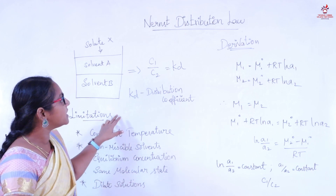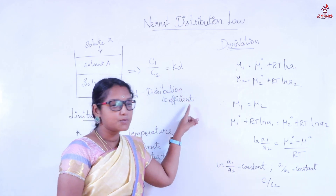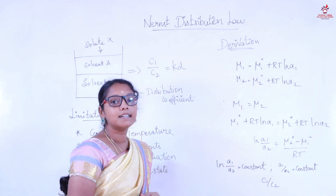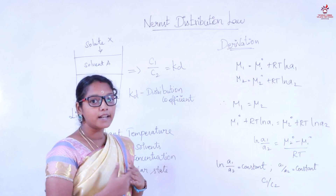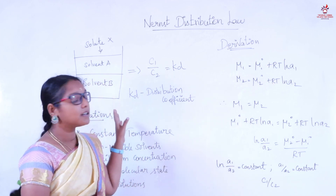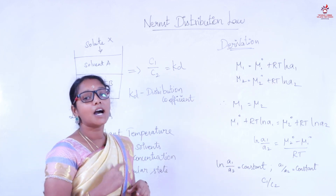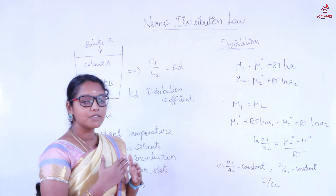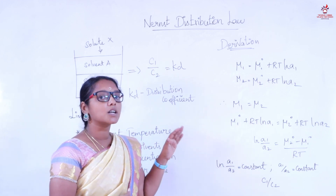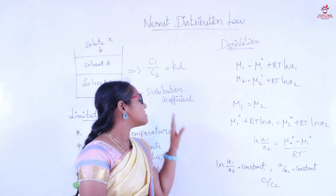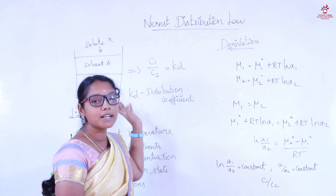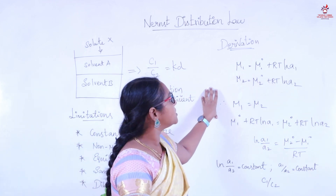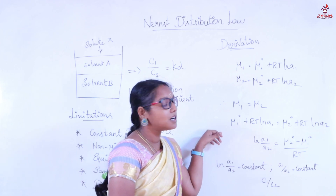Now we go to the derivation of the Nernst Distribution Law. We consider two immiscible solvents: carbon tetrachloride and water, with iodine as the solute. Carbon tetrachloride is denoted as solvent A and water as solvent B. We derive the Nernst Distribution Law using chemical potential.